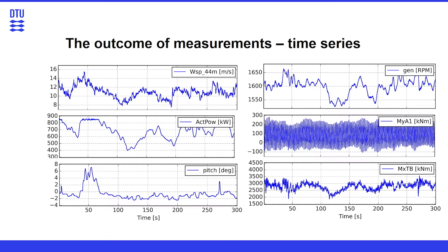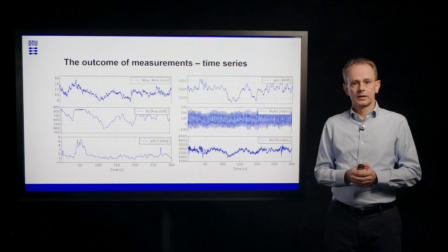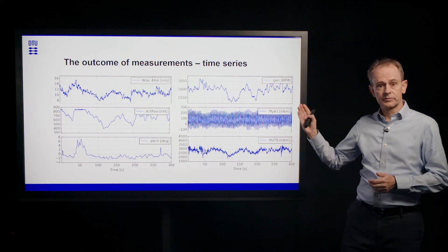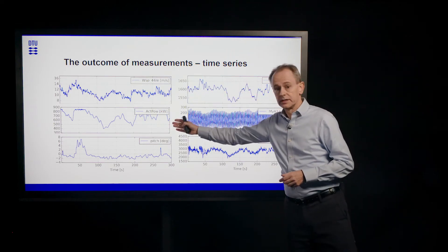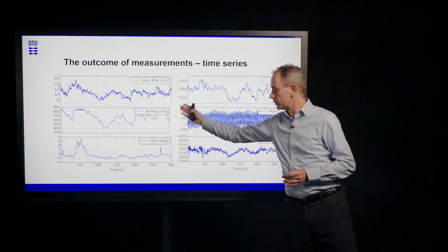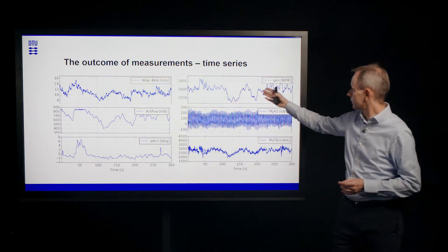The outcome of the measurements is time series. Typically, it's 10-minute time series with a sampling frequency of 20 to 50 hertz. And by using that sample frequency, we can resolve the dynamics of a modern large turbine. Here we see a few examples of measured time series. We see the wind speed, we see the power production of the turbine, we see the pitch angle and the generator speed.